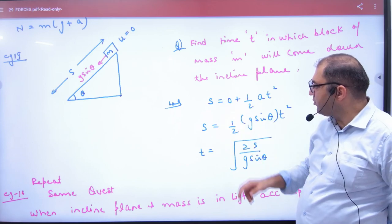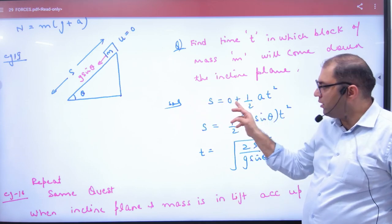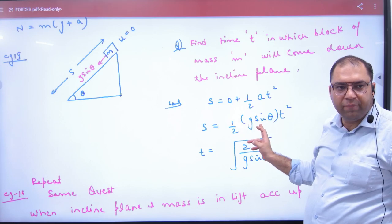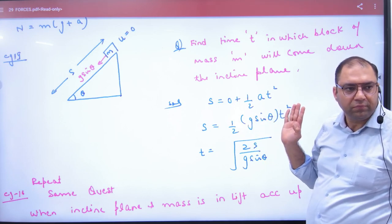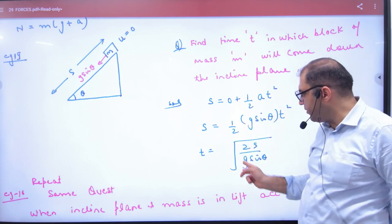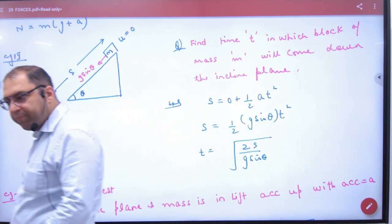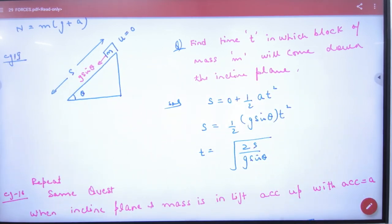So what will we put here? S equals zero, half acceleration g sin theta into t square. Cross multiply and whose value will come? Time. Time is clear how it will come. We have done it.